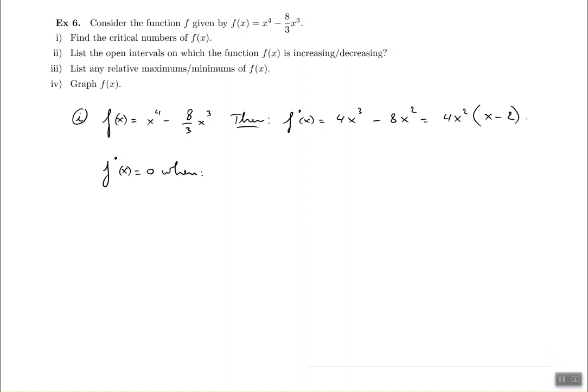It is equal to 0 when either the 4x squared is equal to 0 or when the x minus 2 is itself equal to 0. Let's start with the second one because it's a little bit easier. When x minus 2 equals 0, that means x is equal to 2, and that's the first critical value or critical number.